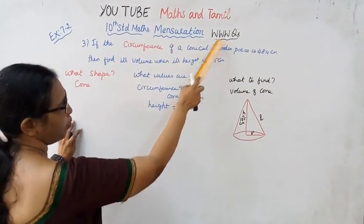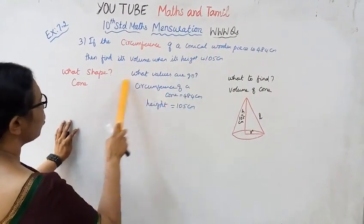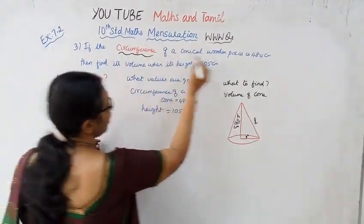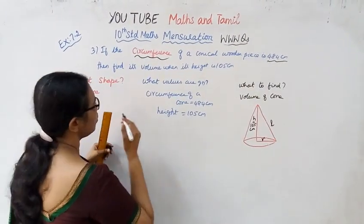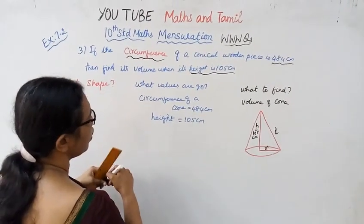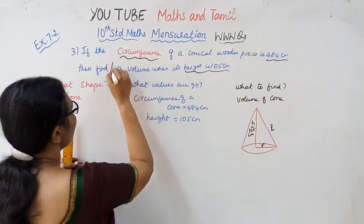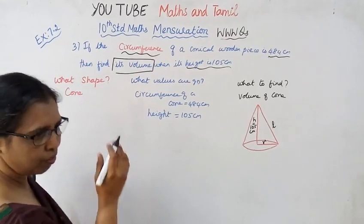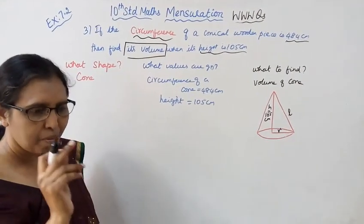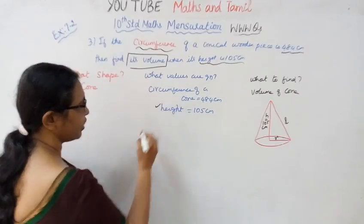The shape given is a cone. Values given: circumference = 484 cm, height = 105 cm. We need to find its volume. Volume of a cone = one-third pi r squared h.